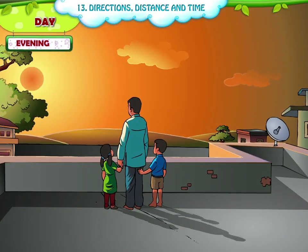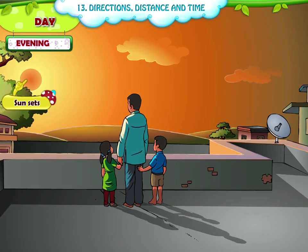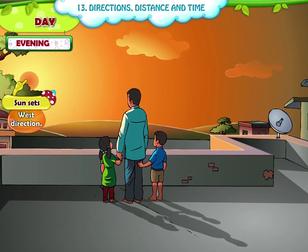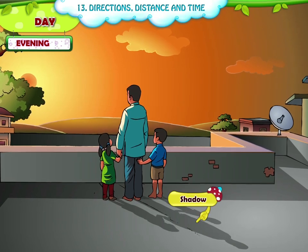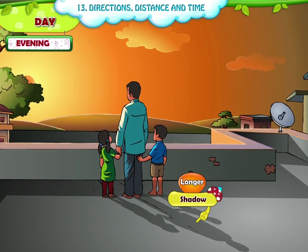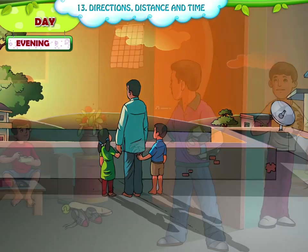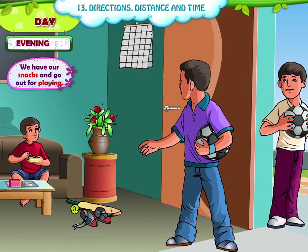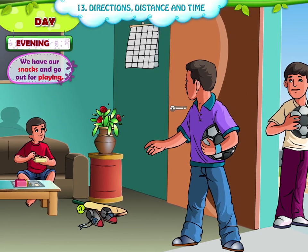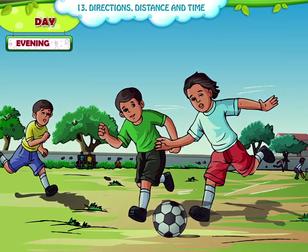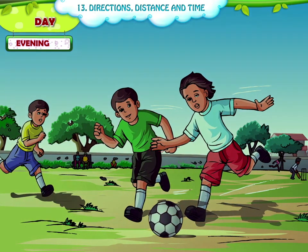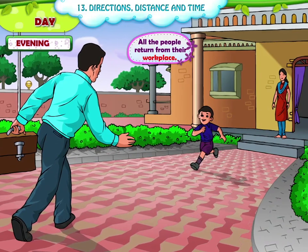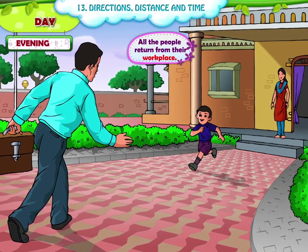Evening. The sun sets in the evening in the west direction. The shadow again becomes longer in the evening. In the evening, we have our snacks and go out for playing. Slowly and slowly, the light becomes less and all the people return from their workplace.